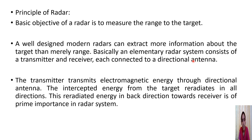In original cases, we had only a single antenna — the antenna was working as a duplexer, connecting to both the transmitter and receiver. That was our elementary radar system. The transmitter transmits electromagnetic energy through the directional antenna, and the intercepted energy from the target re-radiates in all directions. The re-radiated energy in the back direction towards the receiver is of prime importance in radar system, because that is what we analyze to detect the range or other features.